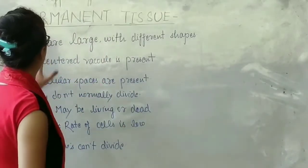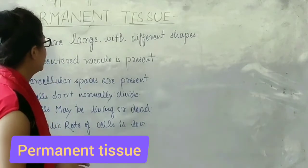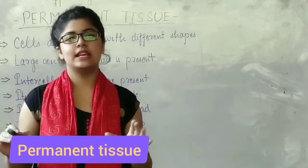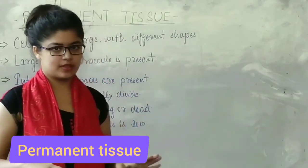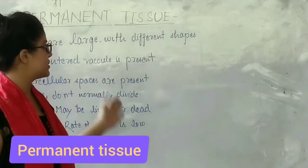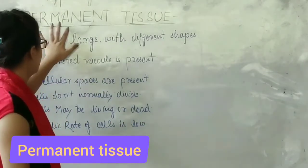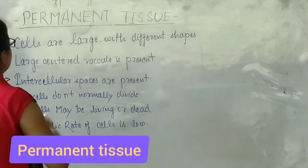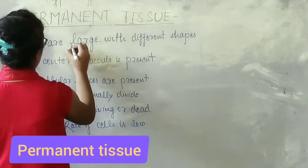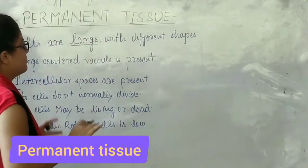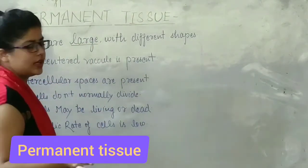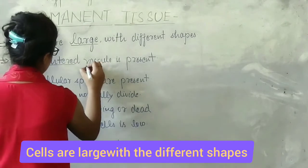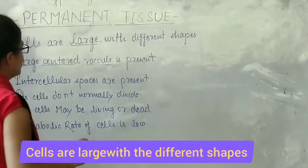The second type of tissue is permanent tissue. The cells of permanent tissue are large with different shapes. A large central vacuole is present, which occupies about 90% of the space in plant cells.